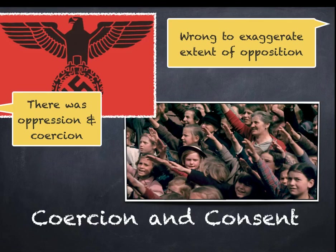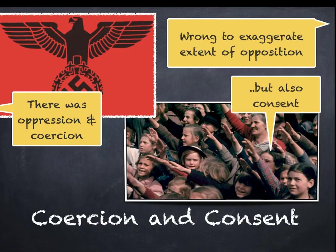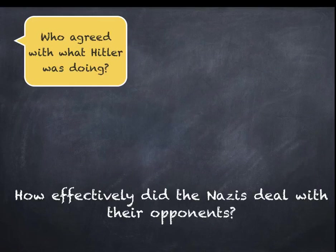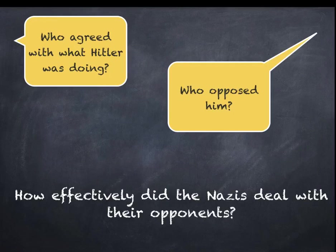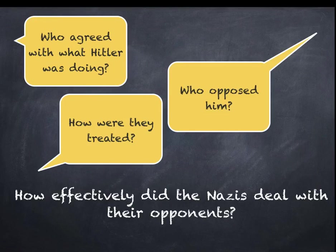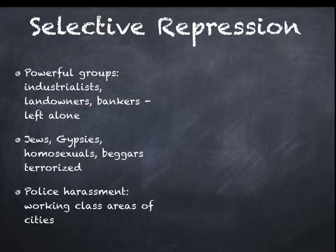Coercion basically means forcing somebody to do something against their will. There was, however, consent. Hitler was reasonably popular throughout the 1930s, more so than the Nazi Party itself. There was also consent, especially from certain groups in society. So how did the Nazis deal with their opponents? Who agreed with what Hitler was doing? Who opposed him? And how were they treated? You should make notes if you're a GCSE student under those three headings.